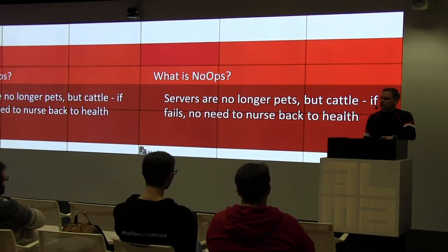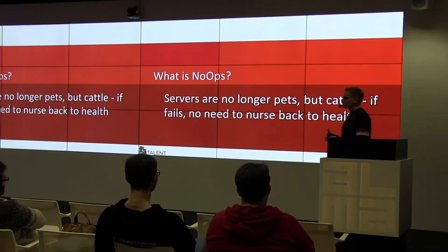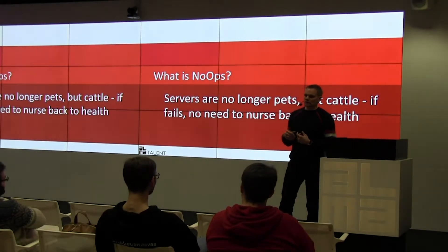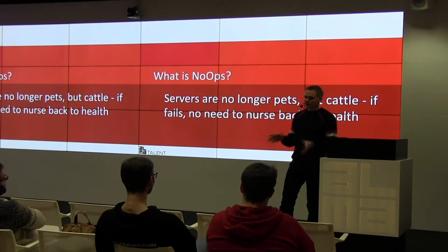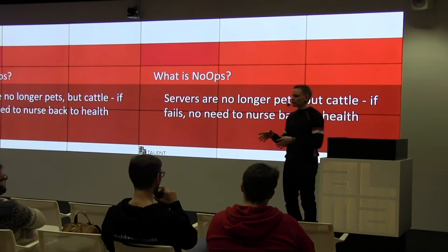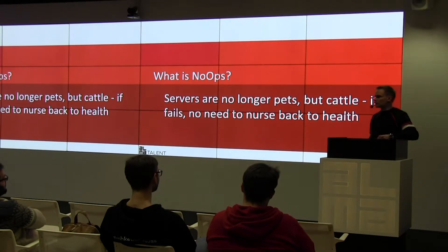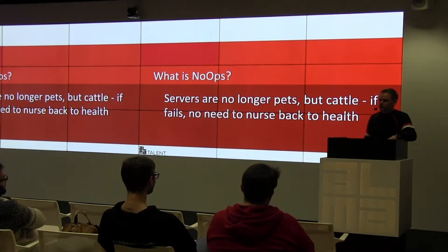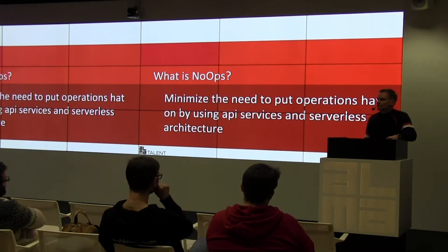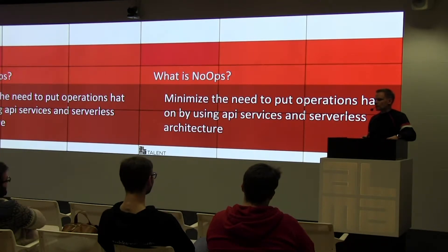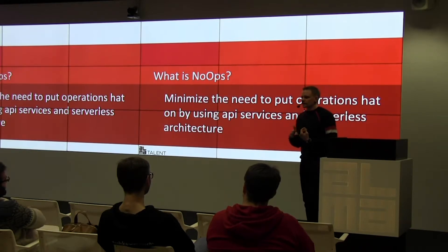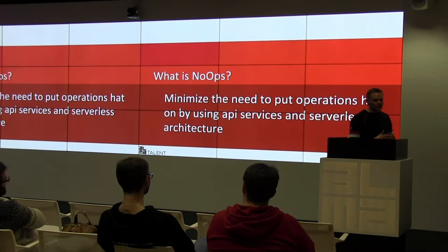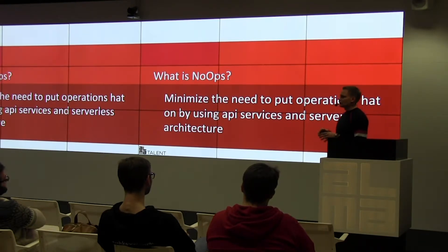This also means you have to treat servers, services, and infrastructure like cattle. Basically, if something fails, you don't start nursing it or figuring out what went wrong — you just delete or kill that entire fleet of services, wherever it is running, and you just redeploy or re-provision the environment. You don't care about the actual infrastructure anymore in that sense. You minimize the time when developers need to put the operations hat on, so most of the time developers are doing development.